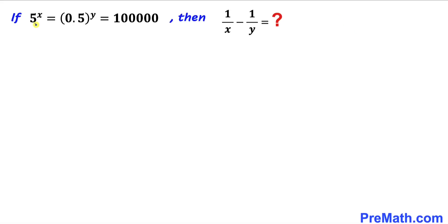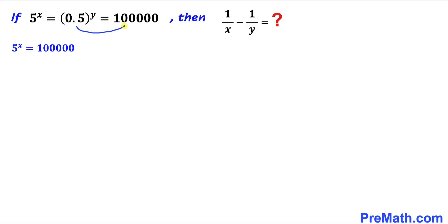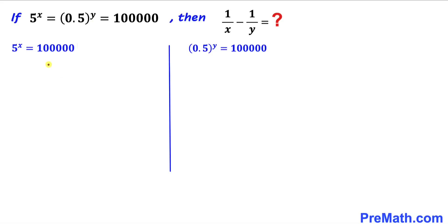Let's go ahead and compare 5 power x equals 100,000 — we are going to equate them. Likewise, let's compare the next two terms: 0.5 power y equals 100,000. Now let's focus on the first equation. On the right hand side we have 100,000, which can also be written as 10 power 5 since we have 5 zeros. So this equation becomes 5 power x equals 10 power 5.